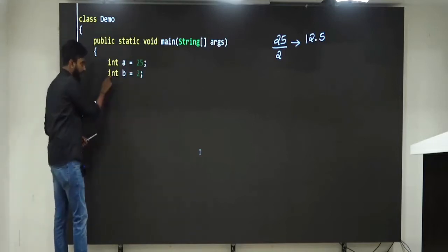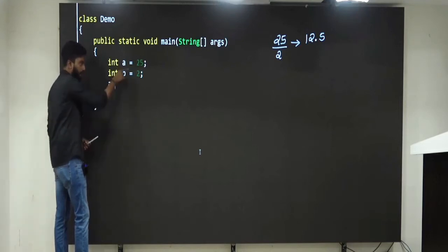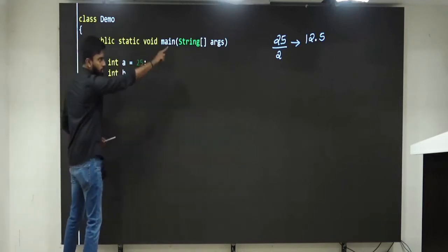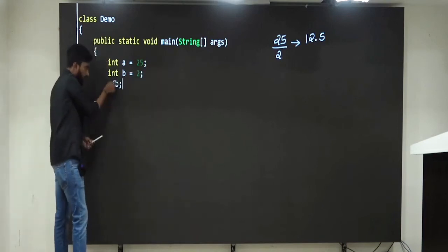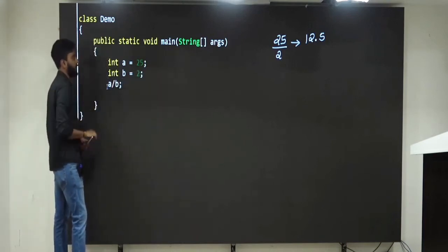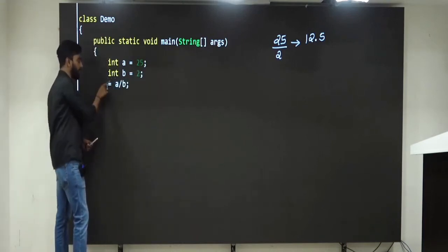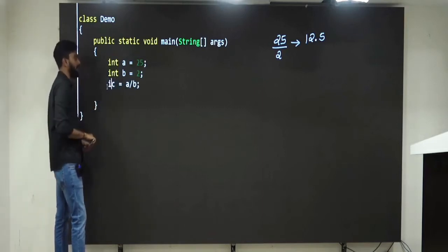see here, I will take a, divide it slash by b, whatever is the quotient, I will store it, assign it. I will assign it to whom sir? c. And obviously c also I will tell is of type integer like this I will tell.